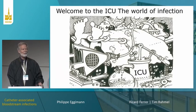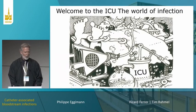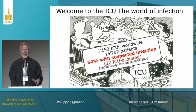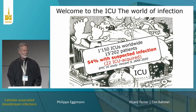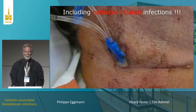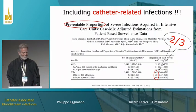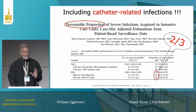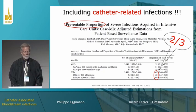Welcome to the ICU — the world of infection. We know that more than half of patients have an infection, and more than half of those are nosocomially acquired, including catheter-related infections. These infections are preventable — they are the most preventable nosocomial infections, and we can prevent CR-BSI far more effectively than ventilator-associated pneumonia.